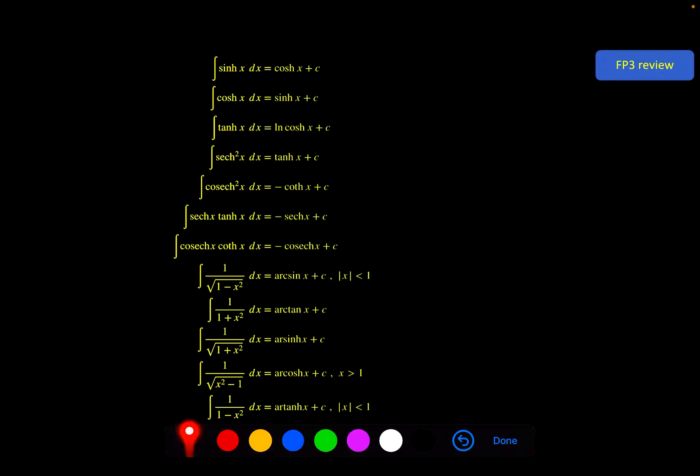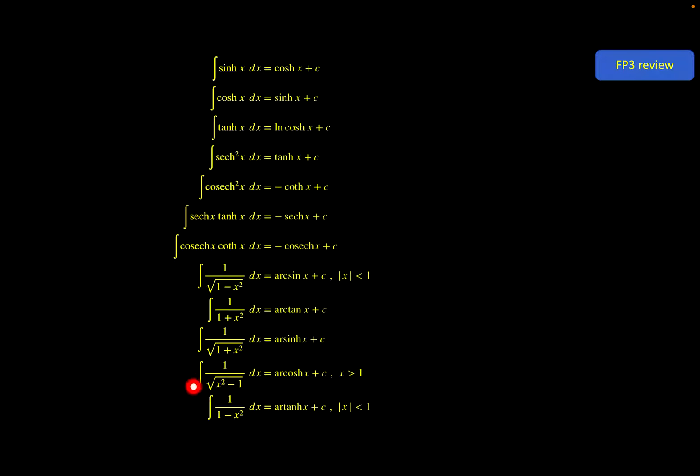Here are all of the results, and a quick review of where they are. These three are in the formula booklet in this section, FP3 integration. These are there as well, FP3 integration with A is equal to 1.